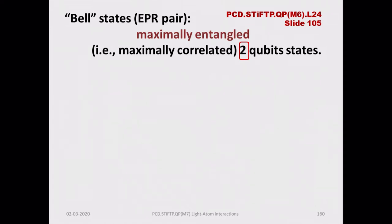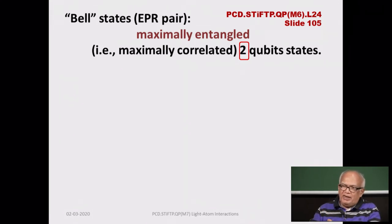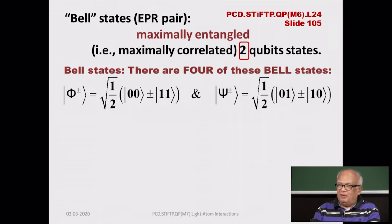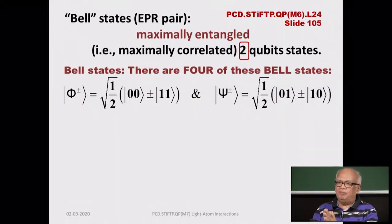I have pulled out a slide from module 6, lecture 24, slide number 105, to remind you that the Bell states — also called EPR states — are maximally correlated qubits. There are four Bell states: phi-plus, phi-minus, psi-plus, and psi-minus.